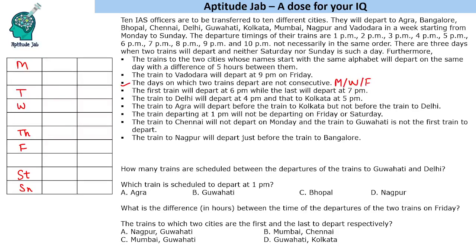Now we need to find out the timings at which these trains go. The train to Vadodara will depart at 9 PM on Friday. Since two trains depart on Friday, we can't tell the order yet. The first train departs at 6 PM and the last train at 7 PM. Delhi will depart at 4 PM and Kolkata at 5 PM. The train to Agra will depart before the train to Kolkata but not before the train to Delhi.